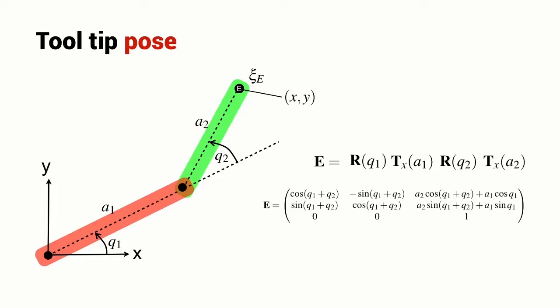We can write the end effector pose as a sequence of elementary homogeneous transformations: a rotation by Q1, a translation along the X direction by A1, a rotation by Q2, and then a translation in the X direction by A2.